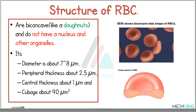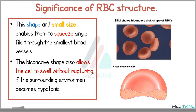What is the structure of a red blood cell? Red blood cells are biconcave — they are like donuts — and they do not have a nucleus nor other organelles. They have a diameter of about 7 to 8 micrometers and a peripheral thickness of about 2.5 micrometers. The central thickness is about 1 micrometer, and the volume is about 90 cubic micrometers. This shape and small size enables red blood cells to squeeze single file through the smallest blood vessels.